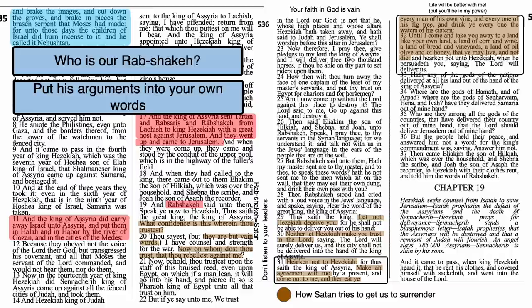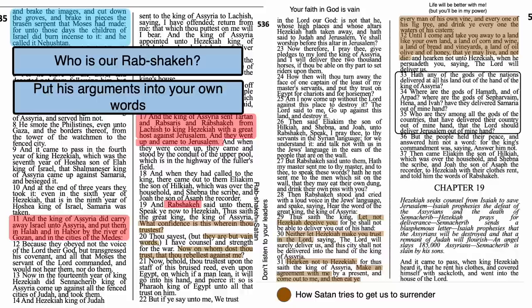Finally, the argument in verses 33–35: 'Hath any of the gods of the nations delivered his land out of the hand of the king of Assyria? Where are the gods of Hamath, Arpad, Sepharvaim — have they delivered Samaria out of mine hand? Who among all the gods of the countries have delivered their country out of mine hand, that the Lord should deliver Jerusalem?' In our own words: others have fallen and so will you. Satan will often point to examples of people who have given up or given in to persuade us to do the same. Intimidation and fear are some of the adversary's greatest weapons.